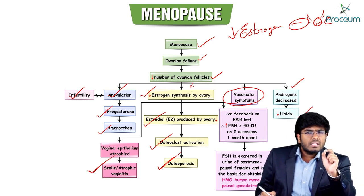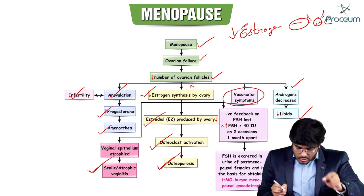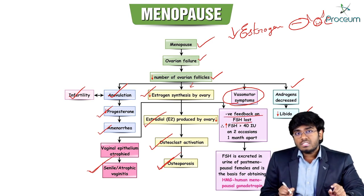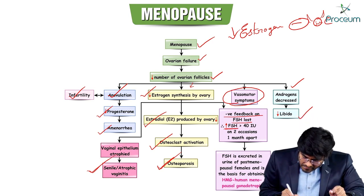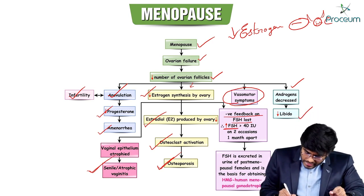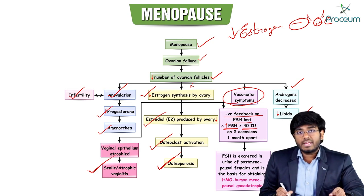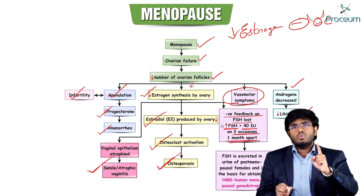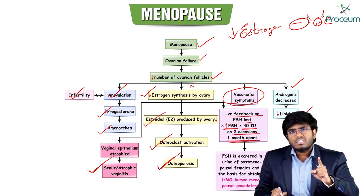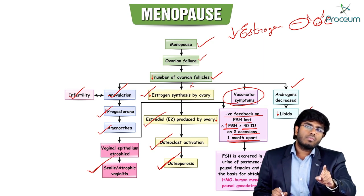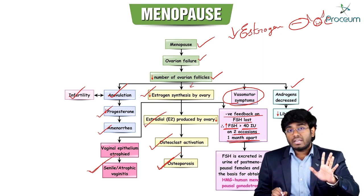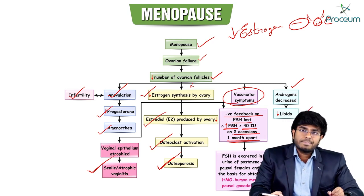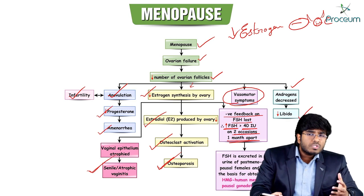With the negative feedback on FSH lost, FSH production increases to greater than 40 international units per mL. This finding should be confirmed on two separate occasions within one month — two readings greater than 40 IU/mL — as an indicator of menopause.